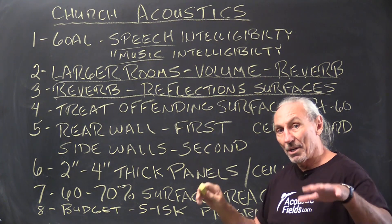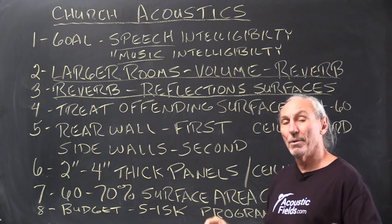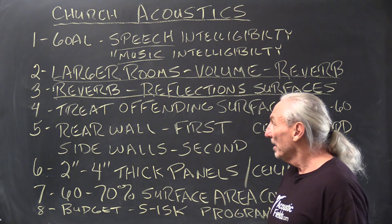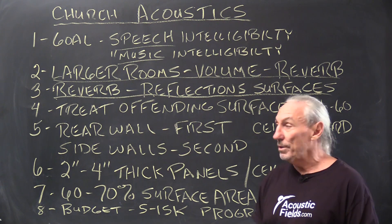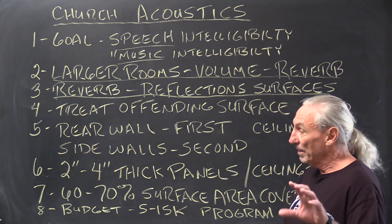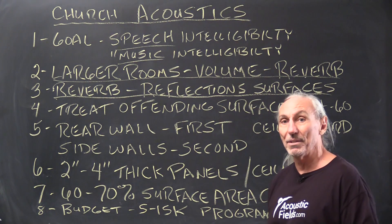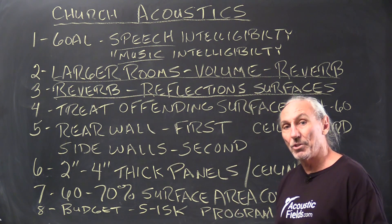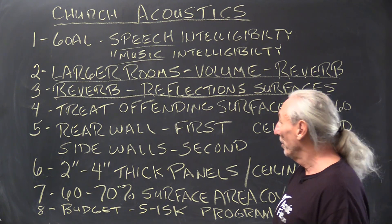We want to get a lower RT60 number — in the one to one-and-a-half to two second range — to make speech and music work in the same room. It also depends on volume, so these are general guidelines. I'm just trying to illustrate the issues here. Obviously each church, each room size, and each usage is different.